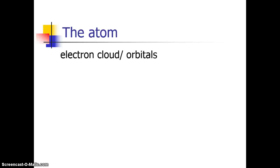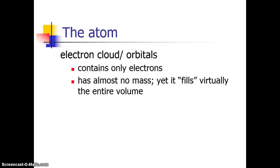What about the electron cloud, or the Schrodinger orbitals, they are also called? Well, they contain only the electrons. And they virtually have no mass, yet they fill almost the entire volume of the atom. They are much larger than the nucleus, about 10,000 times the diameter, and they are not very dense at all, mostly empty space.